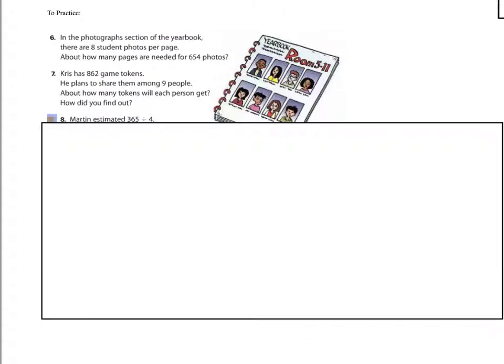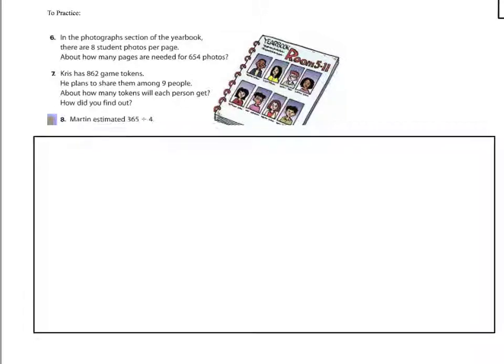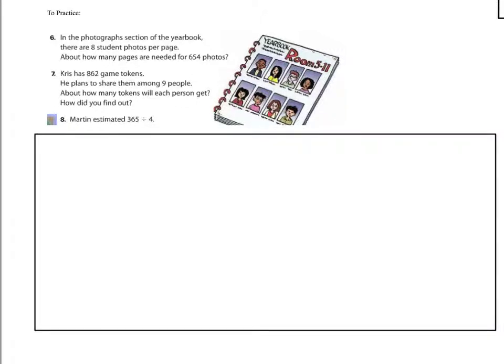All right. At this point, you're going to practice. You're going to pause and practice and try the next three questions. So in question six, we have a photographer section of the yearbook. There can only be eight students on photos per page. So only eight on a page. And about how many pages would be needed if we had 654 photos altogether. So remember, we're taking 654 photos and dividing it into groups of eight because we can only have eight on a page, which then means it is division. Press pause and try that one now.